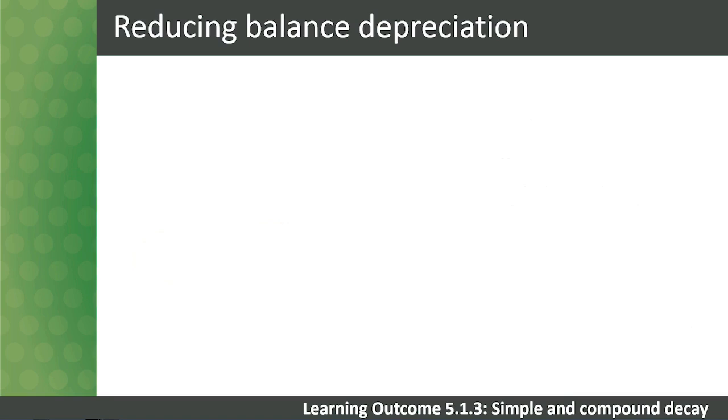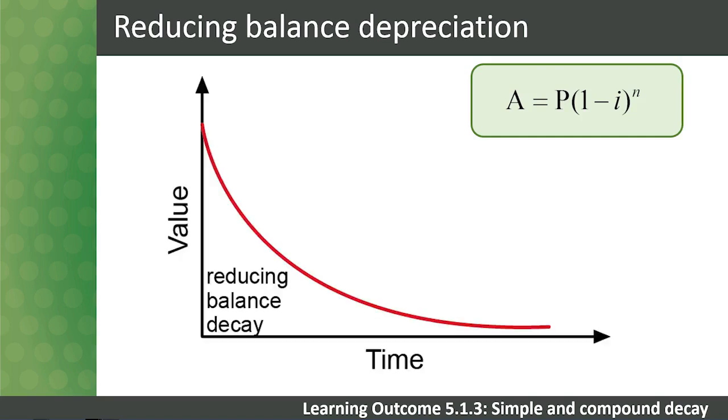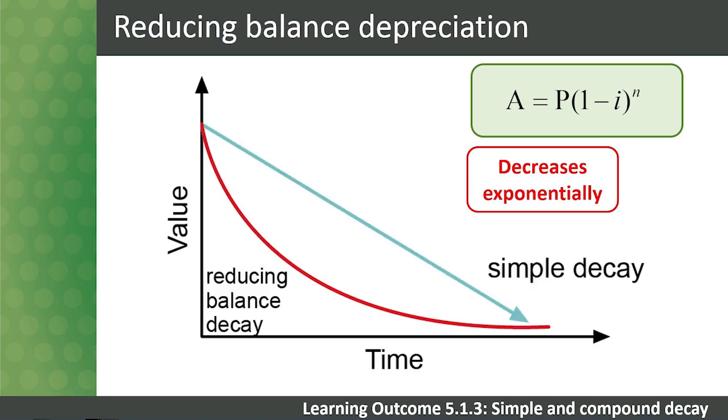The formula for reducing balance depreciation is A = P(1 - i)^N. This can be compared to the formula for compound growth, except in this case we have a decreasing exponential function. We can see from the graphic that initially the decrease in value is quick, but that this decrease in value slows down over time. We can compare this to our simple decay function, which decreases linearly over time. Now let's take a look at an example illustrating compound decay.